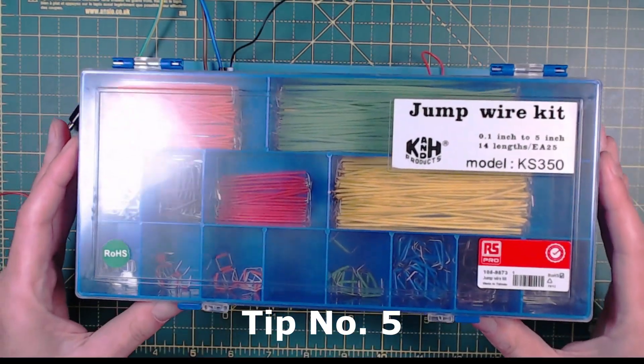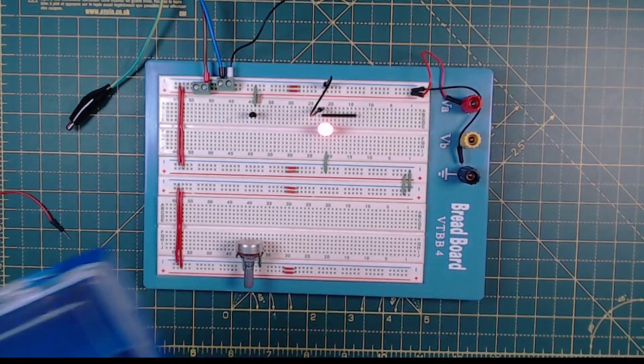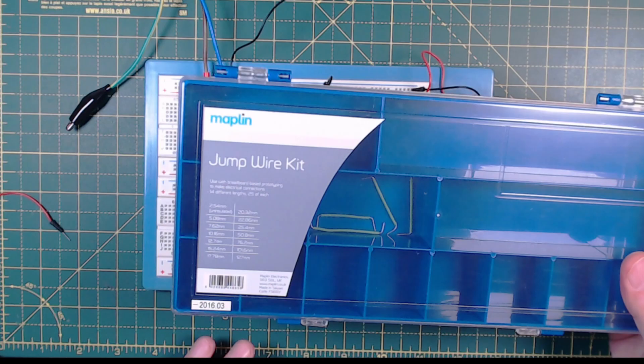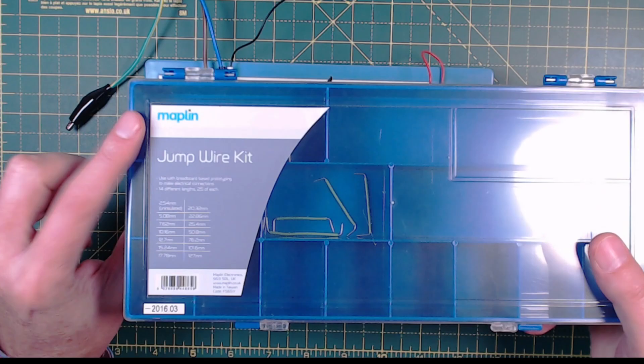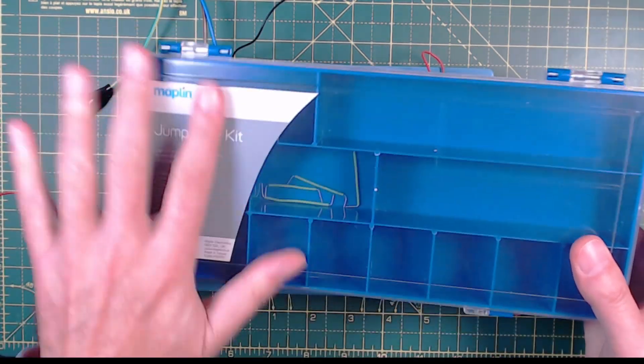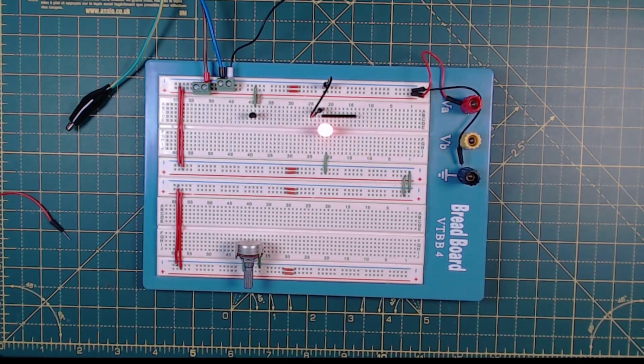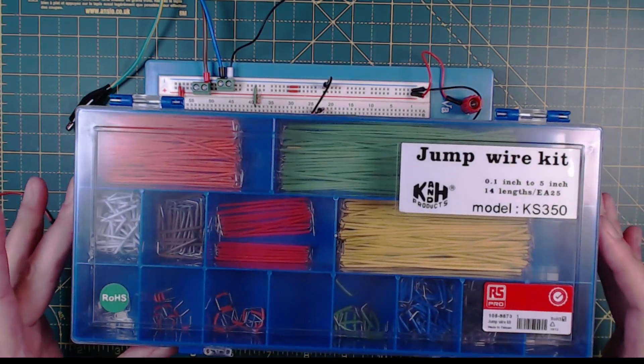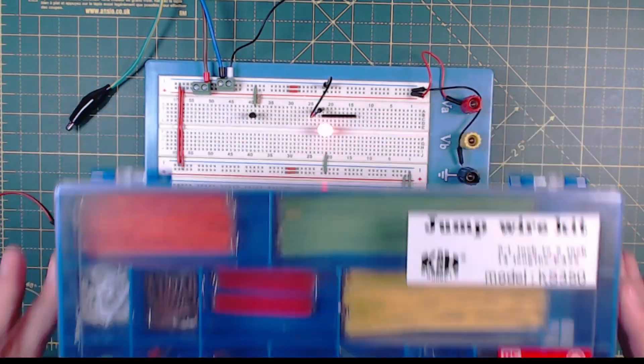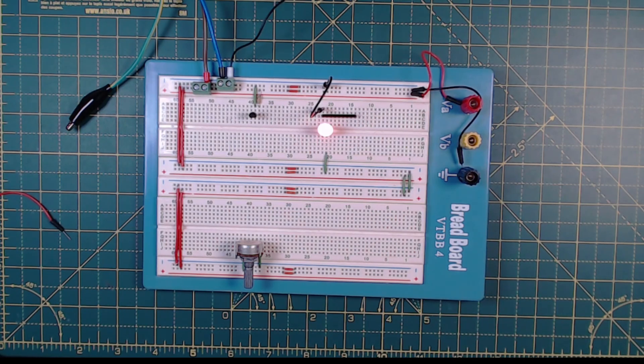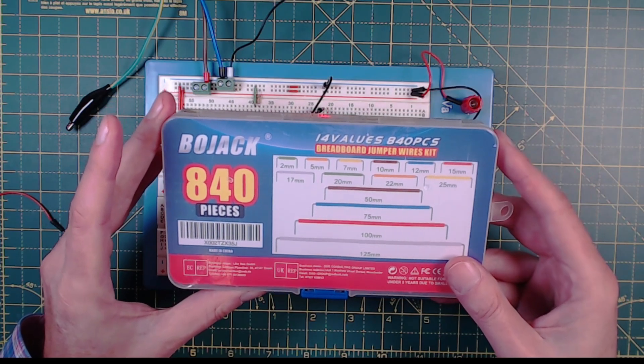All right and again leading on from jumper wire conversation this is a brilliant kit I bought a similar one actually this one it looks like it's exactly the same thing but you can see I bought this from Maplin when they were around and then I used all of them up because I used them for soldering into permanent boards as well actually and then I managed to find another one from RS however they don't do it anymore and I then thought well let's try from Amazon and I bought this kit.